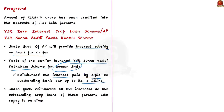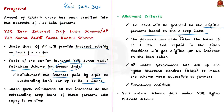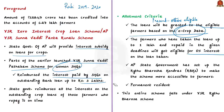This scheme is part of the earlier launched YSR Sunna Vaddi Padakam scheme, which was designed for women's self-help groups, under which the Andhra Pradesh government reimbursed interest paid by SHGs on outstanding bank loans up to ₹3 lakhs. Under the Sunna Vaddi Panta Runalu scheme, the state government reimburses all interest on outstanding crop loans of farmers who repay on time. The state government has now released interest subsidy for crop loans taken during the Rabi 2019-20 season. Loans are granted to eligible farmers based on e-crop data. Farmers who took loans of up to ₹1 lakh and repaid within deadlines are eligible for zero percent interest.